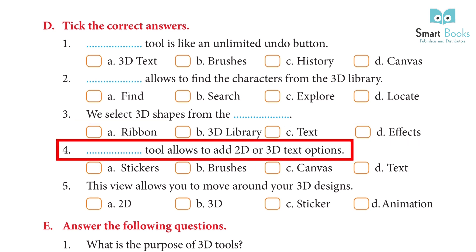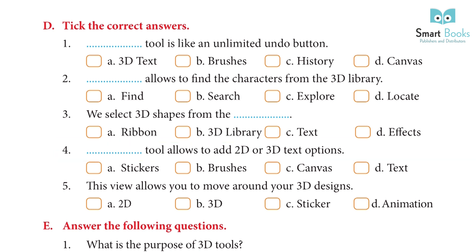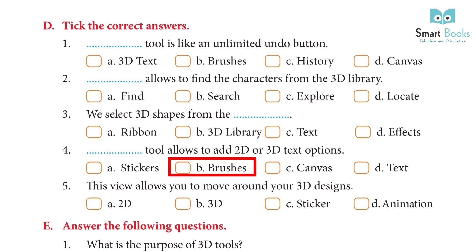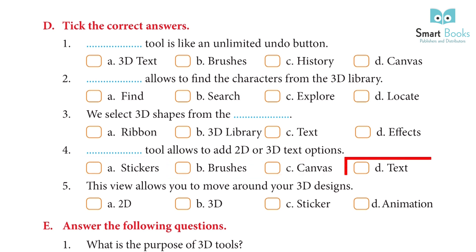4. Dash tool allows you to add 2D or 3D text options. A. Stickers, B. Brushes, C. Canvas, D. Text. Answer: D. Text.